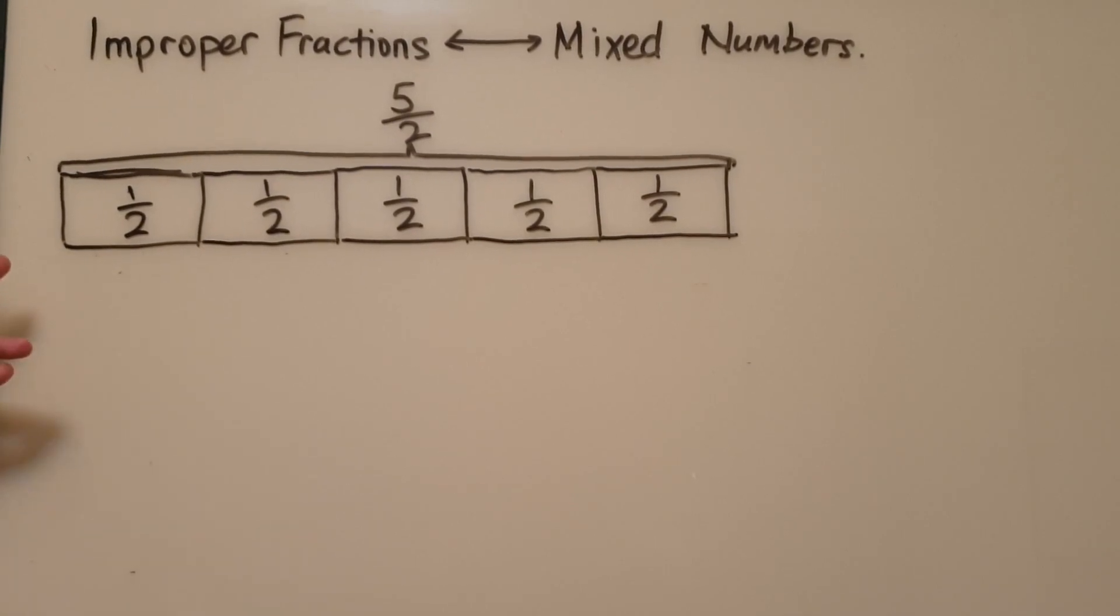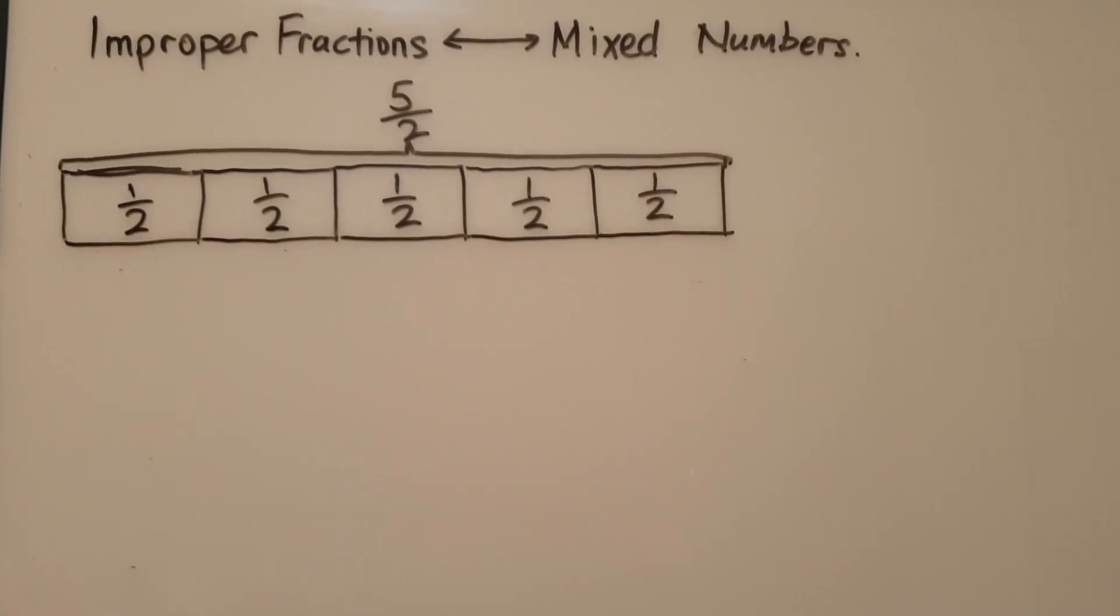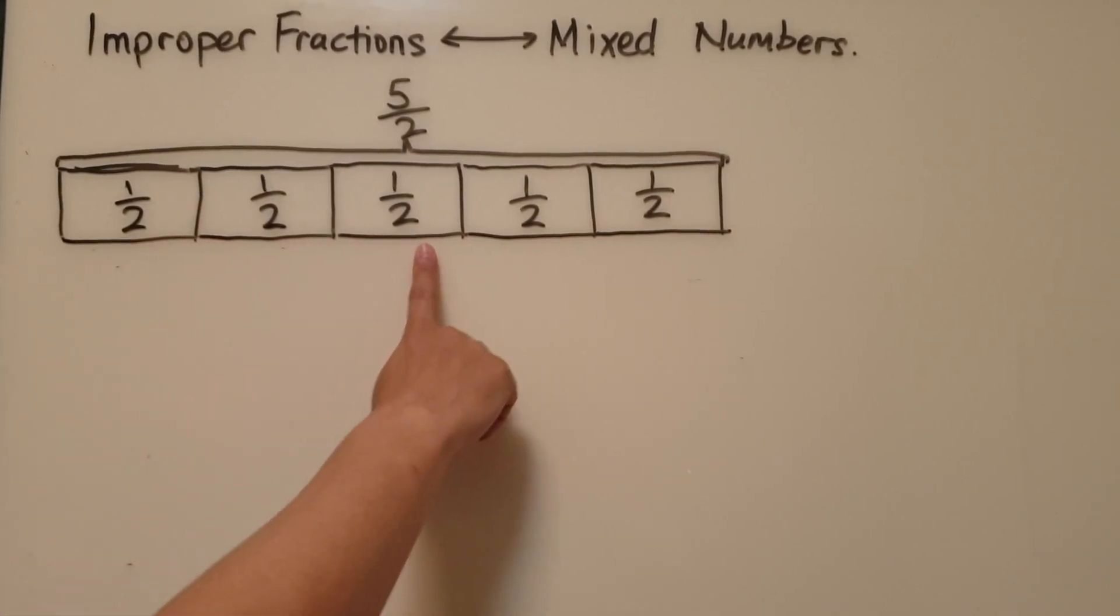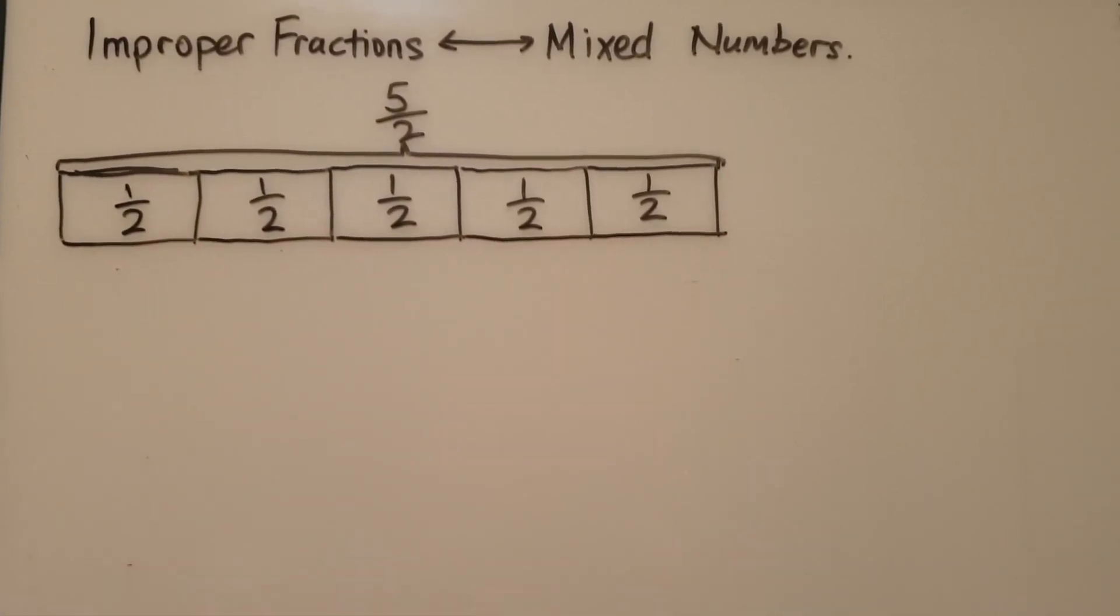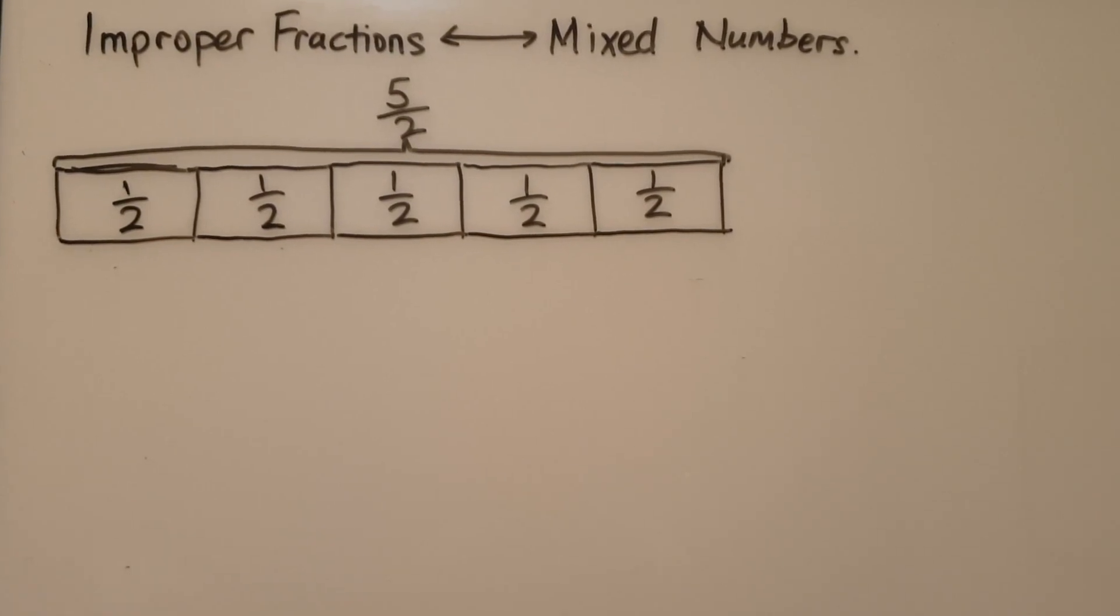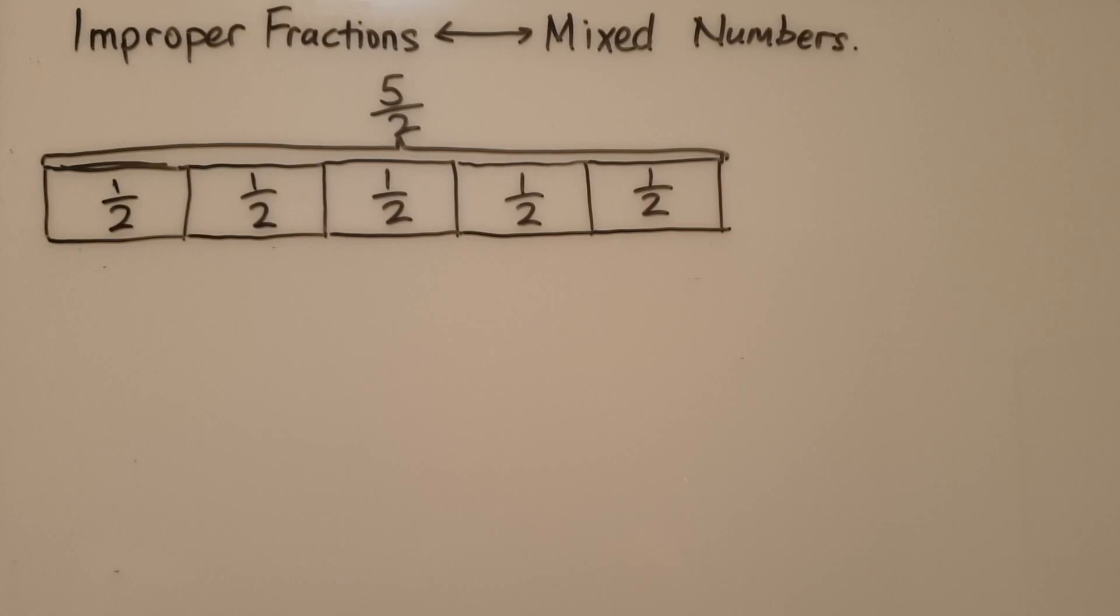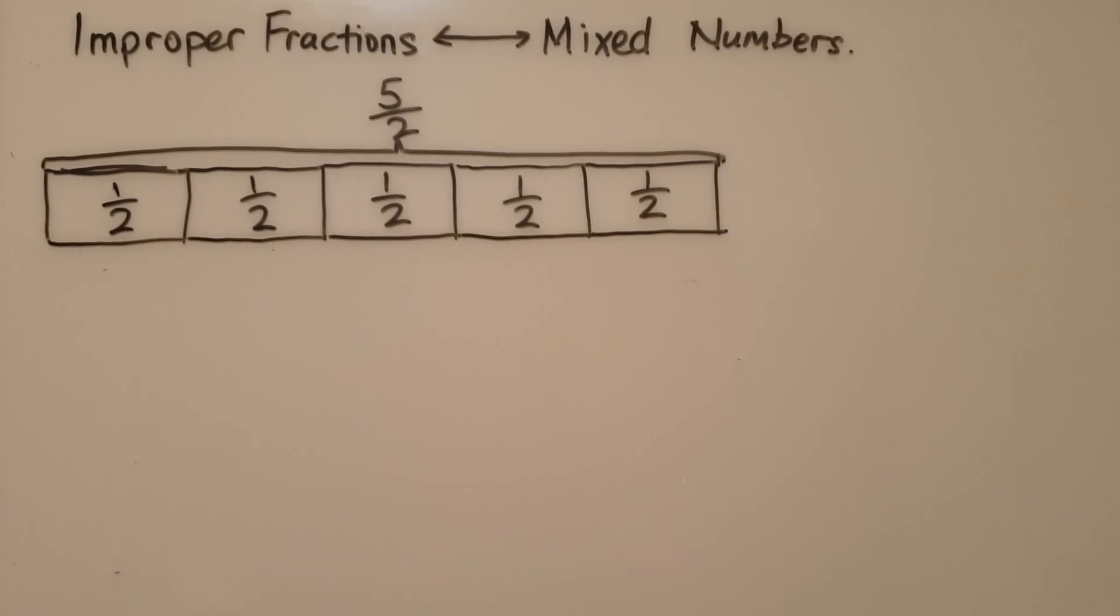So here we can see that we have 5 halves: 1, 2, 3, 4, 5. They form an improper fraction which doesn't look that nice. So what we're going to do is change them back into a mixed number. How do we do that?